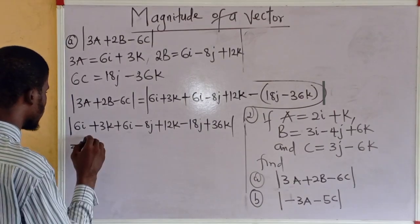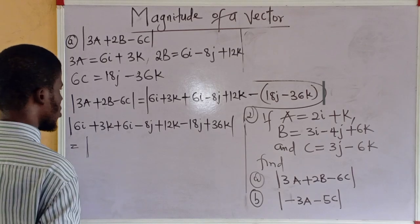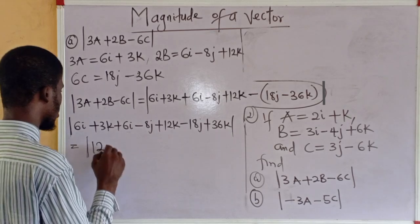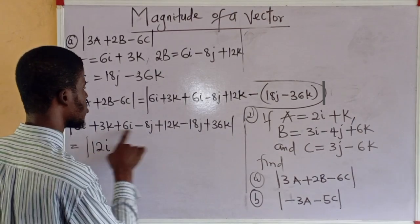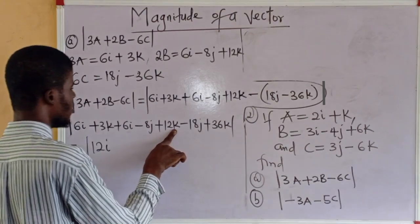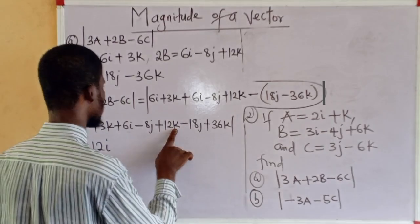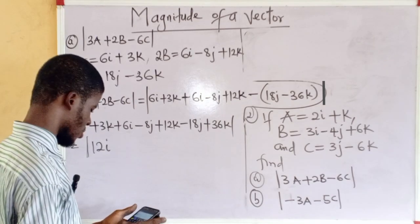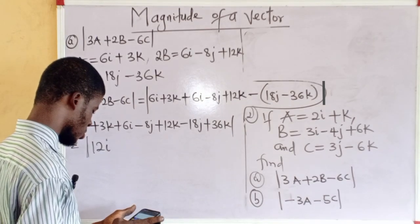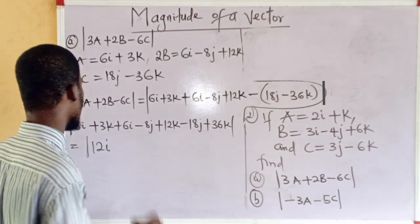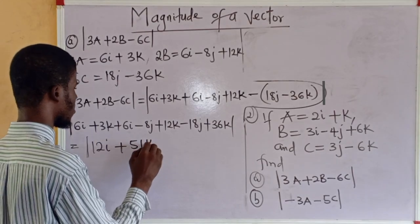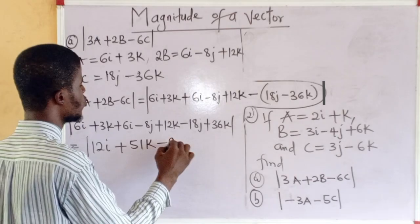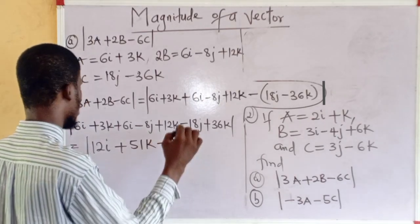Now, we have the absolute value of, 6i plus 6i is 12i. 3k plus 12k, that's 15k. 15k plus 36k, that's 51k. Then, minus 8j minus 18j is minus 26j. So, let's take the modulus of this now.